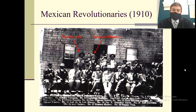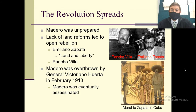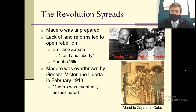Here's a picture of Mexican revolutionaries Pancho Villa and Francisco Madero. Francisco Madero is the guy who ended up getting arrested and went against Díaz. So the revolution grows. Madero was kind of unprepared for a revolution — he was just running for president. The lack of land reforms led to open rebellion because people wanted land. The two biggest names out of the revolution are Emiliano Zapata, whose entire motto was 'land and liberty,' and Pancho Villa. Those two had followers called Zapatistas and Villistas, which were the two largest groups during the revolution.